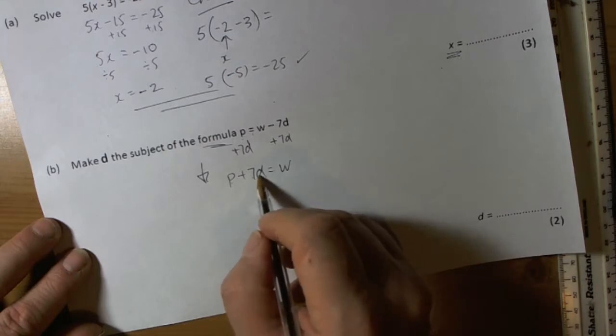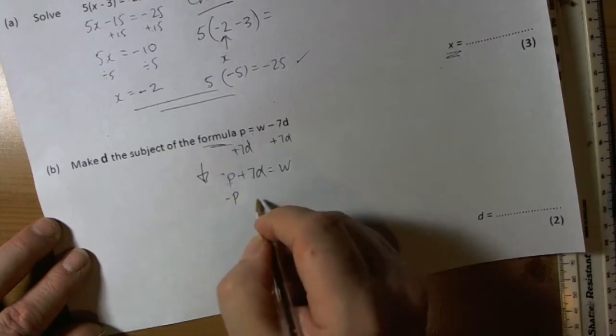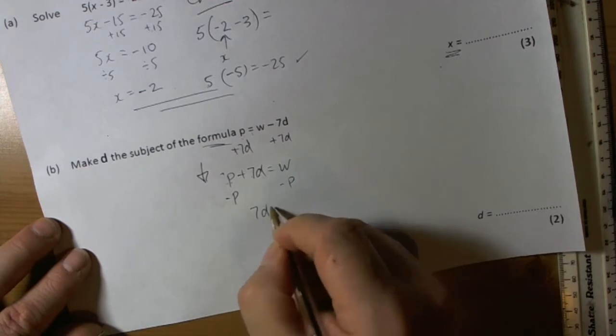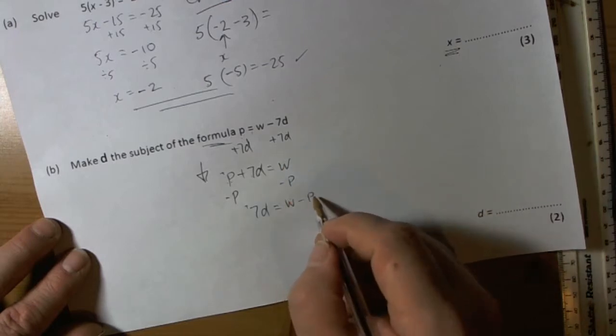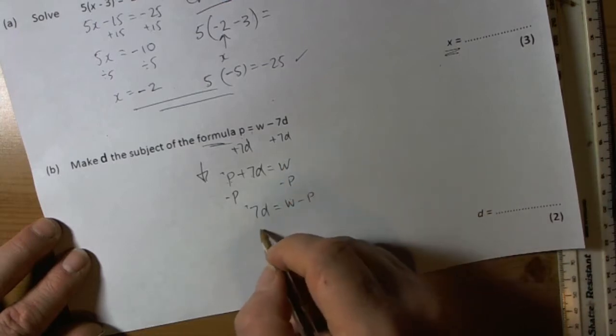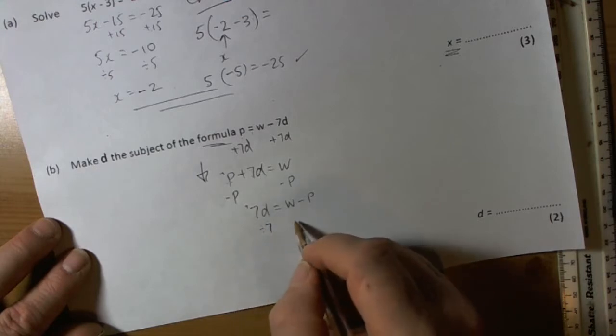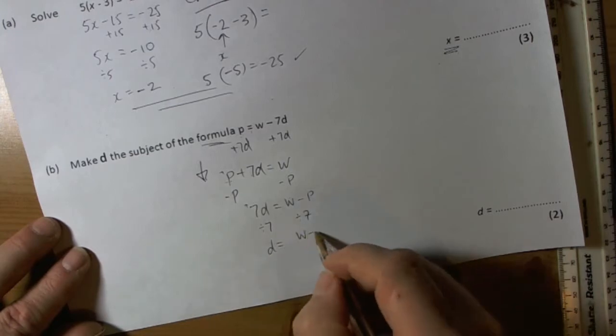In front of here, although we don't write it, it's positive, so the opposite of that is takeaway. So we end up with 7d positive equals w minus p. We know what 7d's are, so we need to divide by 7, because 7 times d, opposite is divide. So we end up with d equals w minus p over 7.